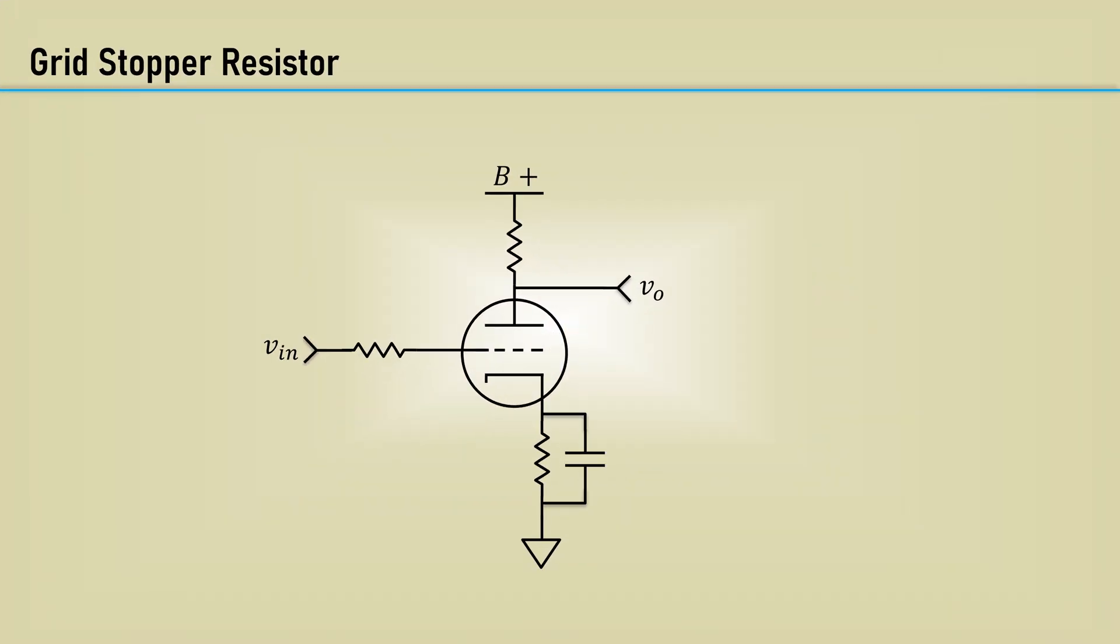Some audio amplifiers use a series resistor on a grid input. It's called a grid stopper resistor. It exploits the use of the Miller capacitance as a low-pass filter to get rid of any RF that comes in that could be rectified and heard.